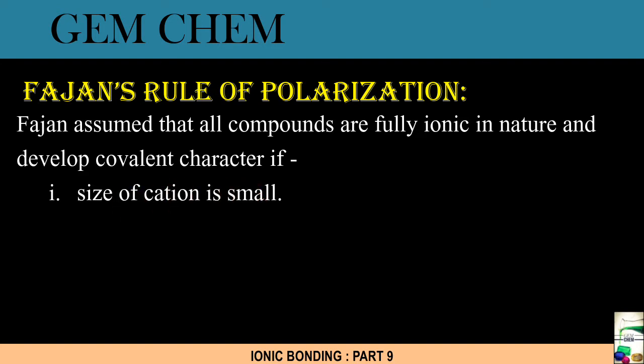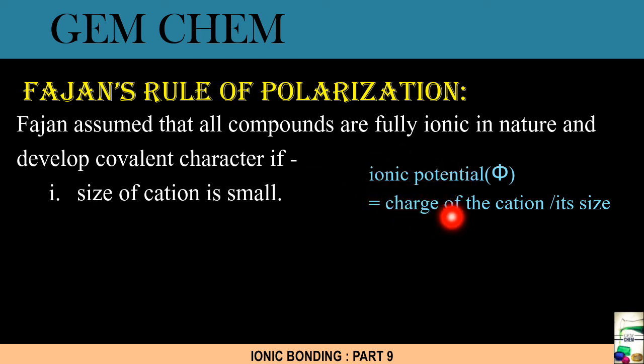Now remember one formula - ionic potential (Φ) equals charge of the cation divided by its size. So if the charge is high and the size is small, then our ionic potential is high. So smaller the size of the cation, higher will be its ionic potential, and thus we will get greater covalent character of the corresponding compound. Higher the ionic potential, higher will be our covalent character.